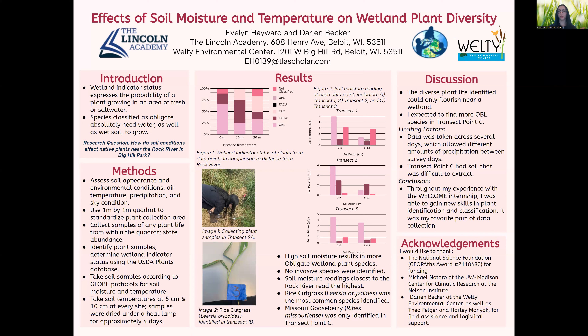The samples collected from transect point A had the highest number of obligate wetland plant species, as shown in figure one. Throughout my study, the 23 plant species identified included 10 obligate species. The second highest classification was facultative wetland plants, of which there were seven identified. It could be reasonably concluded that about 74 percent of the species identified would find it very difficult or even impossible to survive in other areas of Big Hill Park. Throughout my data collection period, no invasive species were found in any of my six sites.